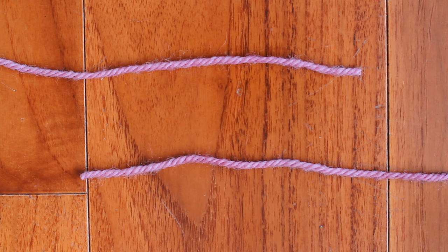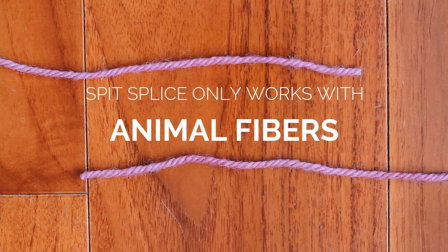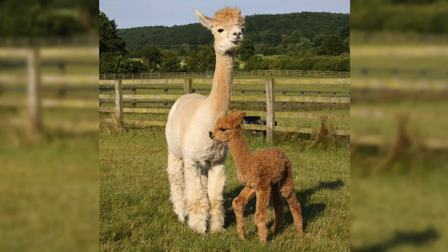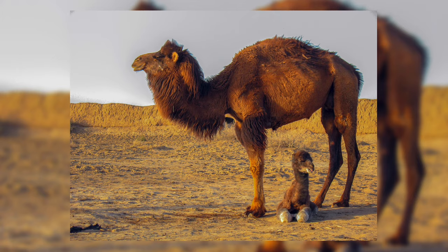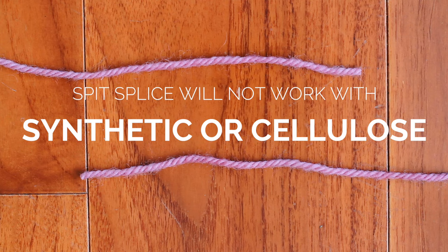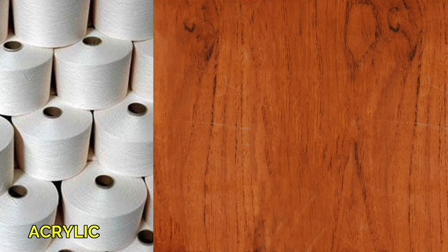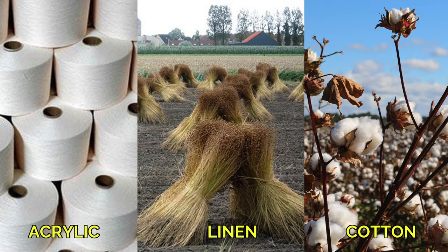So let's talk about how this works. So the spit splice has its limitations in that it only works for animal fibers. So wool, alpaca, mohair, camel hair, cashmere. Synthetic and cellulose fibers like acrylic, linen, cotton, this method is not going to work for those types of yarns.